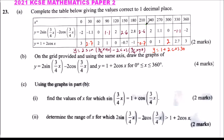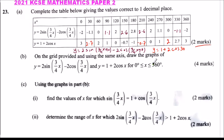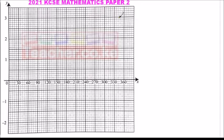Part B: on the grid provided and using the same axes, draw the graphs of y = 2sin(¾x) - 2cos(¾x) and y = 1 + 2cos(x) for 0° ≤ x ≤ 360°. You get four marks for this. The grid is on another page so let's go ahead and draw that.